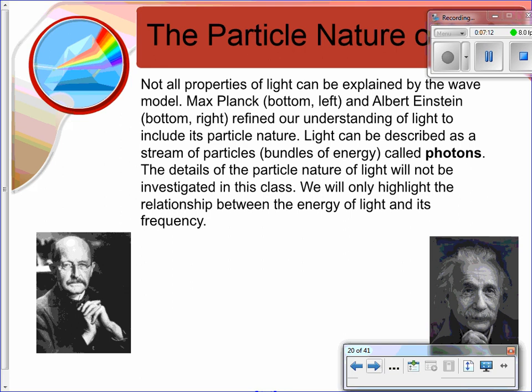So the particle nature of light. Remember, we talked about the duality of light. Light can be explained by a wave model, but not all properties of light can be explained by that. So these two guys, Planck and Albert Einstein, who hopefully you recognize, refined the understanding to include particles. Light can be described now as a stream of particles or bundles of energy called photons. We're not going to get really into the details, but we're going to highlight the relationship between energy and light. And we're going to talk a lot about photons as we get later into the unit with electrons.